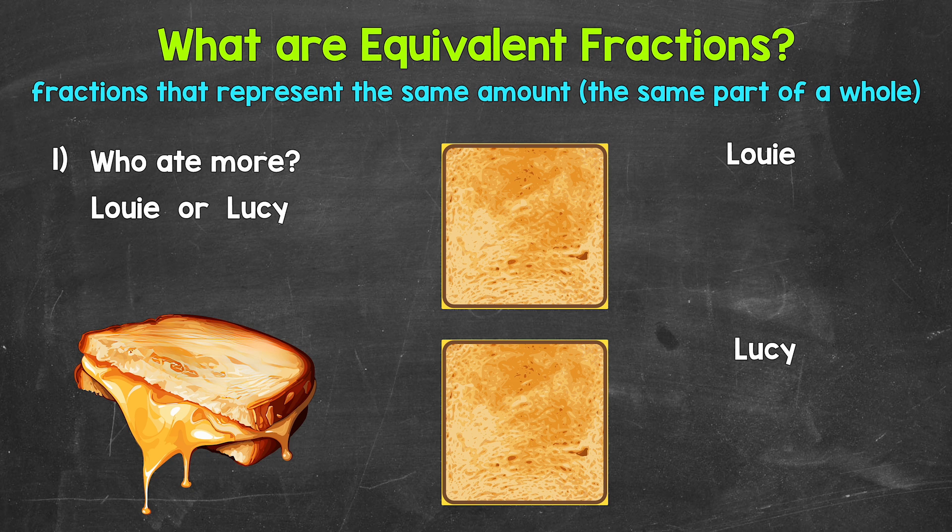Let's jump into some examples and see. We will start with number one, where we have: who ate more, Louie or Lucy? So Louie and Lucy both have a grilled cheese, both the same exact size, so they are both starting with one whole grilled cheese. Louie cuts his into two equal pieces — so halves — and Lucy cuts hers into four equal pieces — so fourths. Here's Louie's grilled cheese cut into two equal pieces, and Lucy's cut into four.